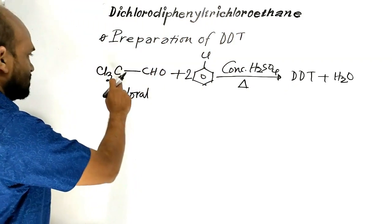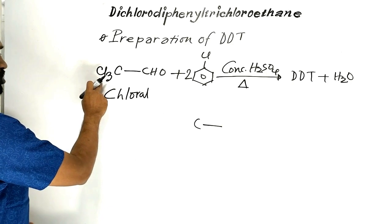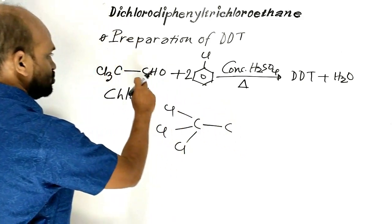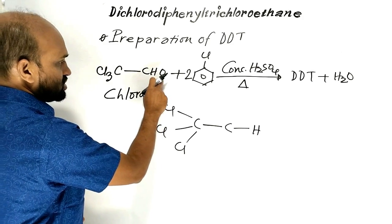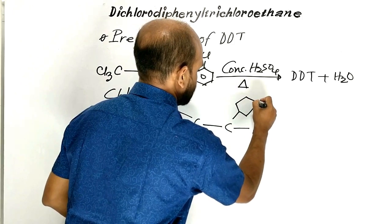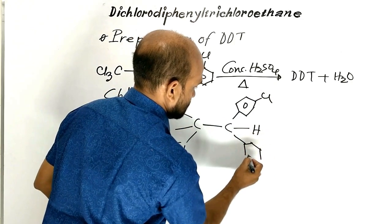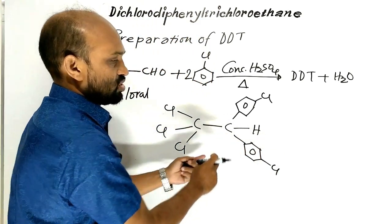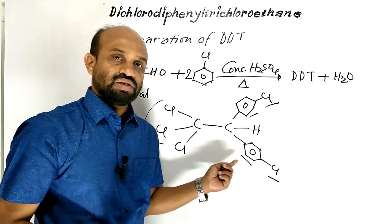From this chloral, DDT is obtained in this way: three chlorine atoms remain with this carbon, and with this carbon, in place of one oxygen atom, two chlorophenyl groups are added. Then DDT — dichloro diphenyl trichloroethane — is obtained. This is the reaction by which DDT can be prepared.